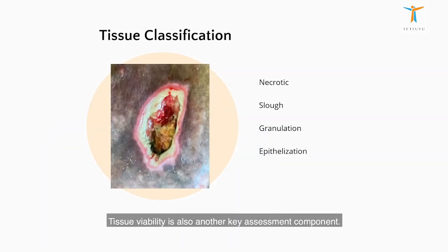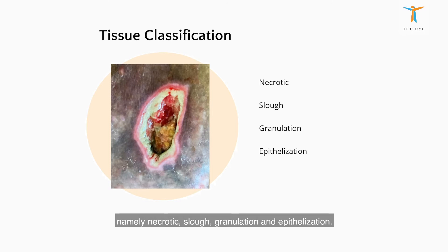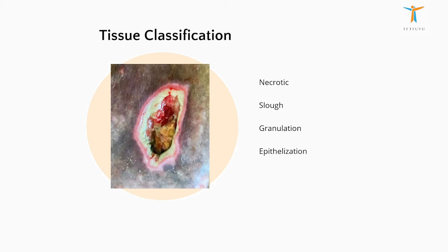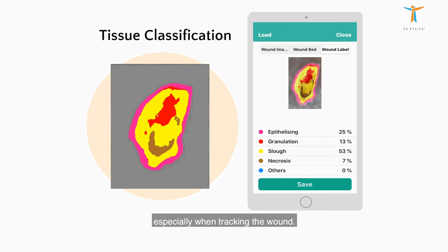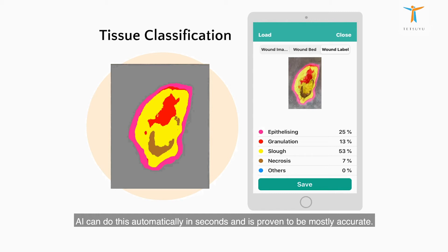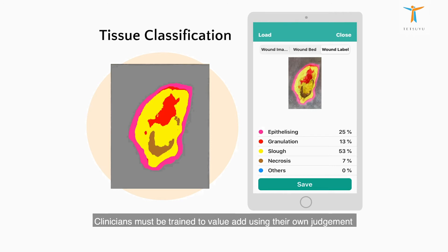Tissue classification. Tissue viability is also another key assessment component. Identifying the types of tissues — namely necrotic, sloughy, granulation, and epithelialization — we would also want to know the change in the amount of these tissues, especially when tracking the wound. It is not easy for us to estimate accurately using the human eye. AI can do this automatically in seconds, and it is proven to be mostly accurate. That being said, the element of clinical expertise and experience is still very valuable. Clinicians must be trained to value and, using their own judgment, edit accordingly when necessary.